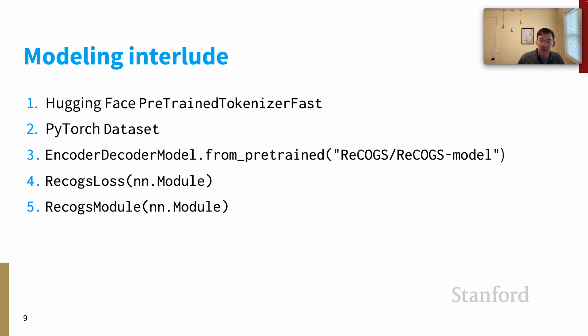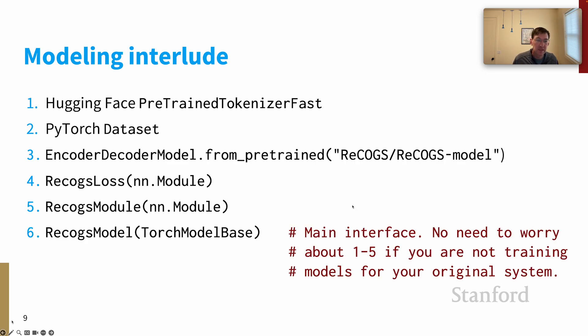Then we have ReCOGS module, and this is a lightweight wrapper around Zen's model that is again designed to help us be compatible with the underlying optimization code in particular that we have in our course code base. And then finally, the interlude ends at step six with ReCOGS model.